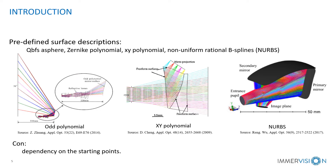The second approach is to combine a predefined optical description with traditional optical systems, such as the Q-type surface, Z-link polynomial, and X-Y polynomial. The results highly depend on the starting point.